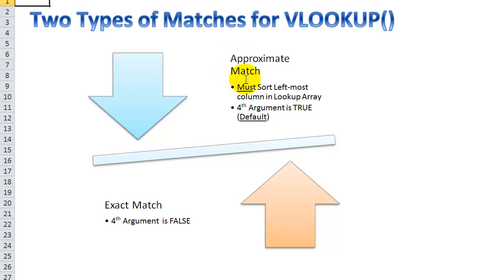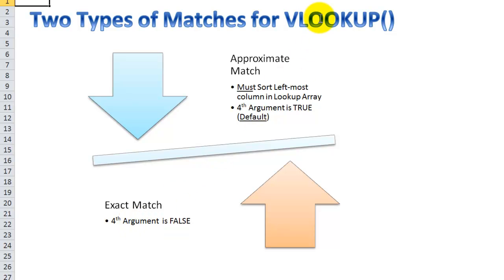The approximate match is the default return for a VLOOKUP. If you want an approximate match, you must sort the leftmost column in your lookup array. You can optionally include the word true as your fourth argument, or since it is the default, just omit it — don't include the fourth argument. On the other hand, for the exact match, the key is to use the word false as the fourth argument in the VLOOKUP function. It's not necessary to sort the values in the leftmost column, but you must include false.